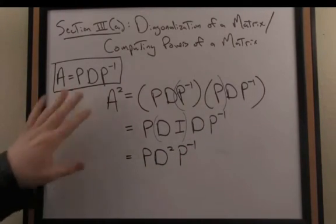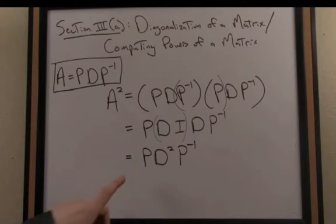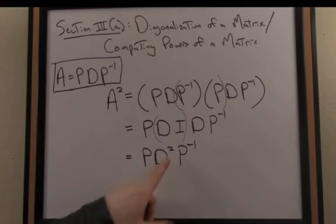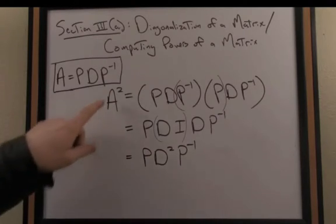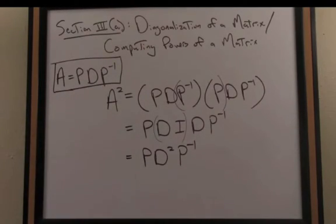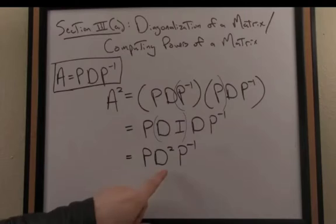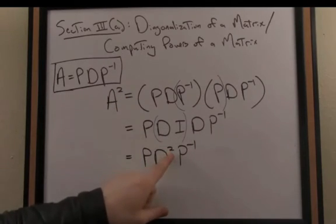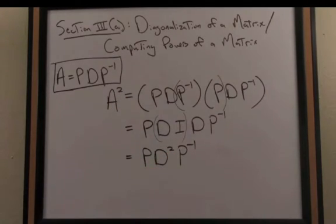In lieu of actually computing A squared, I could instead compute PD squared P inverse. And as we'll see, if I compute a higher power of A, the same pattern emerges, which allows me to save a lot of computational effort by just extending the exponent to the diagonal matrix.